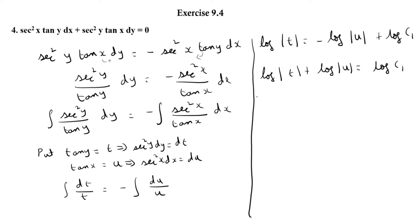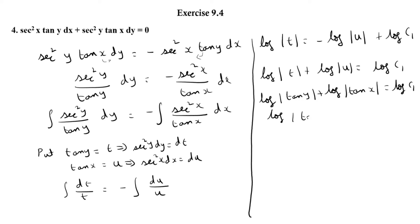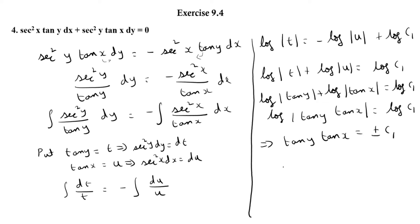Substituting back t = tan y and u = tan x, we get log|tan y| + log|tan x| = log c₁, so tan y · tan x = c. This is the general solution of the given differential equation.